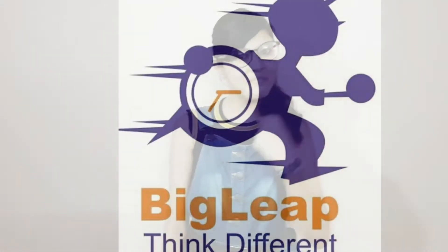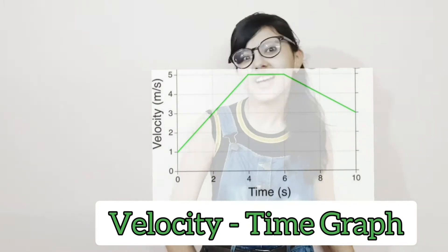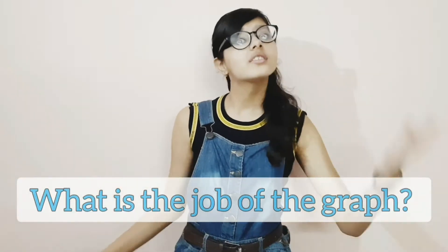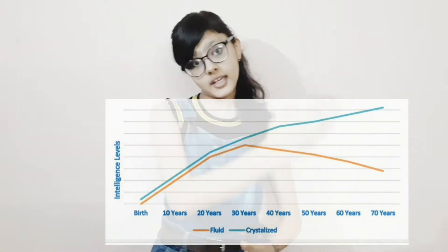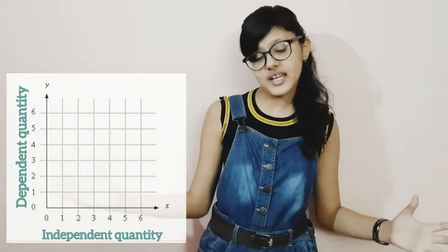Hello everyone, welcome. My name is Neha and today we are going to learn about velocity-time graphs. The purpose of a graph is to show one quantity over another. The independent quantity is on the x-axis while the dependent quantity is on the y-axis. You can plot anything on a graph — age vs. innocence, age vs. intelligence — any category you want.